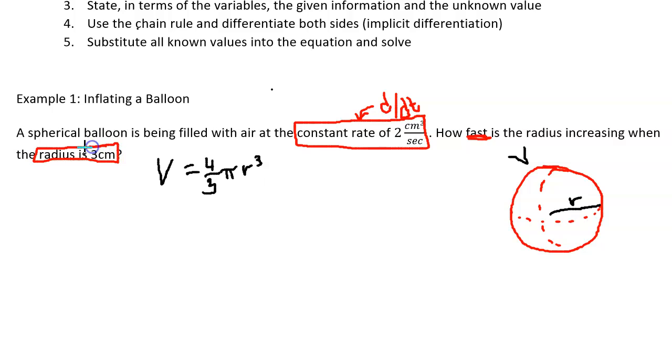So this not only tells us that r is equal to three but it also tells us that we are looking for dr/dt. How fast is the radius changing with respect to time?